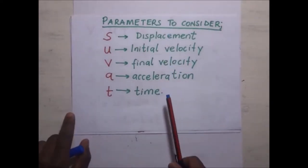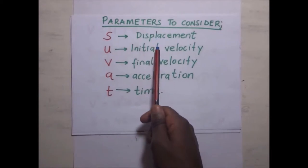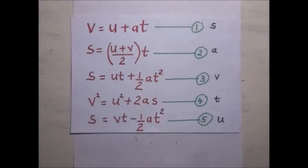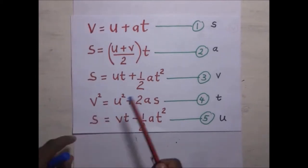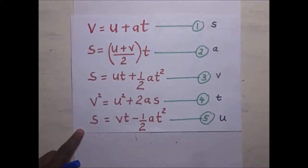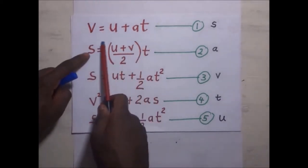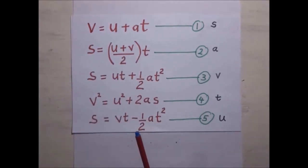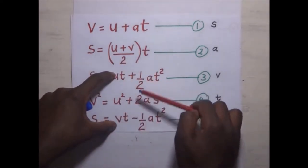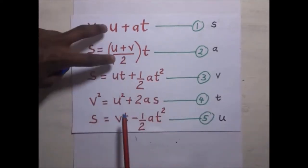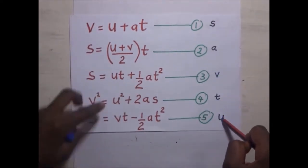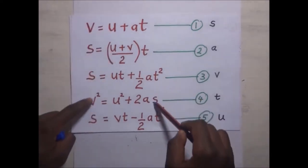Throughout, the parameters considered were: displacement (s), initial velocity (u), final velocity (v), acceleration (a), and time (t). The first two equations were derived from scratch — the first using the definition of acceleration, the second using the area under the velocity-time graph. The remaining three were derived by substituting and eliminating v, t, and u respectively.